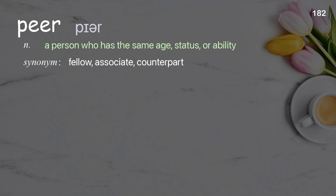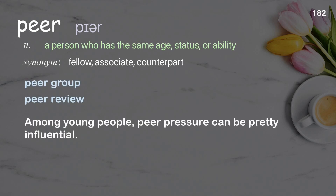Peer: A person who has the same age, status, or ability. Examples: Peer group. Peer review. Among young people, peer pressure can be pretty influential.